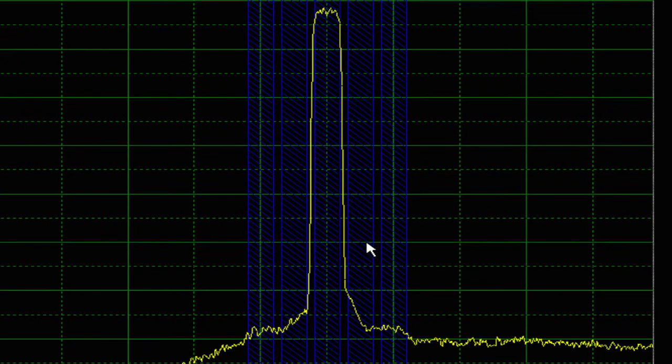Then to the right of that is the upper adjacent channel. And following that is the alternate upper channel. To the left of the main signal is the adjacent lower channel, followed by the alternate lower channel.